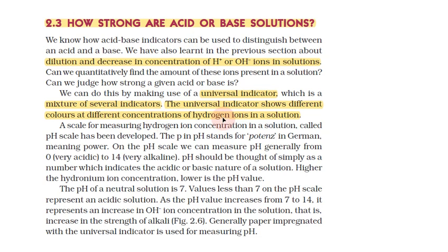What do we do with base? What do we do with strength? What do we calculate with the pH scale? A scale for measuring hydrogen ion concentration in your solution is called the pH scale. We use the pH scale. It means potence — a German word meaning power. P stands for potence, meaning power. H is hydrogen ion concentration.